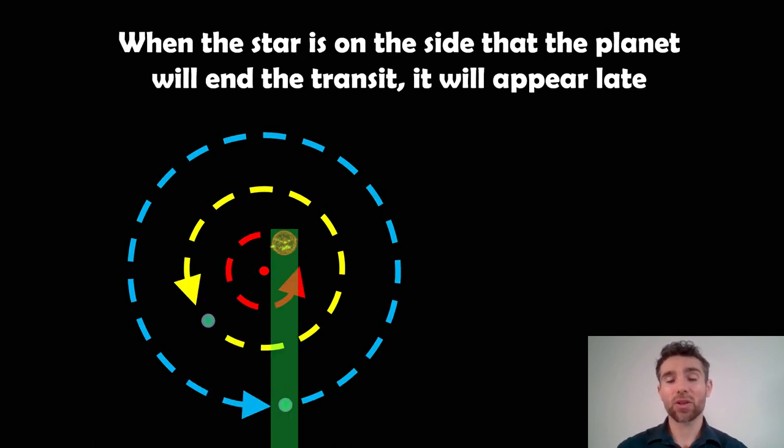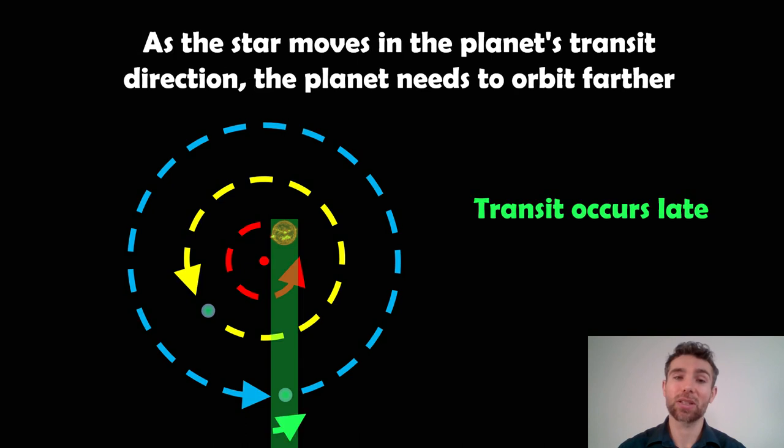On the other side, so when the star is on the opposite side, along with the actual planet, this time here, the star is moving kind of in the same direction that the planet will have the transit. So they're kind of moving together, which means that the planet has to go around slightly further this time around. So because the star is going around that way, the planet is also going that way. The transit occurs slightly further along on the planet's orbit. It causes it to appear late, basically. So as the star moves in the planet's transit direction, the planet needs to orbit slightly further. You get a slightly later transit.